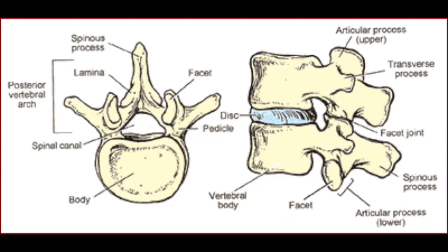The intervertebral discs are wedged between the vertebral bodies — the anterior aspects of the vertebrae — and that's where the majority of compressive force is transmitted through the spine. Posteriorly we have structures around the vertebral arch: the spinous process is the pointy part that goes straight back. You can usually see those spiny knobs on people with less body fat, and most people can palpate the spinous process of C7, T1, T2 at the base of the neck.